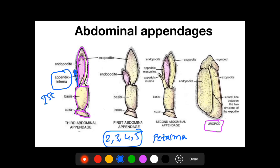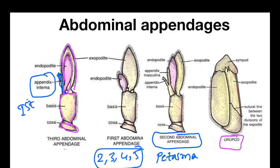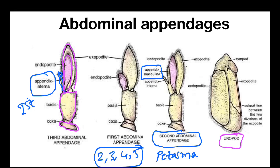The first abdominal appendage differs from the typical abdominal appendage by lacking the appendix interna structure. Also, the second abdominal appendage differs from the typical third, fourth, and fifth abdominal appendages by having an extra structure called appendix masculina. This appendix masculina is present between the appendix interna and endopodite, and it is present only in the male's second abdominal appendage. The female's second abdominal appendage follows the typical abdominal appendage structure.